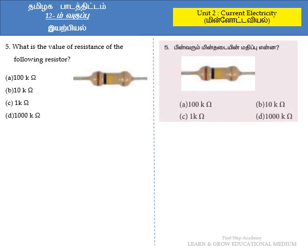Hi, hello, welcome. This is your First Step Academy learning educational medium. In this video we are going to discuss the answer for the book question number 5 in unit 2, current electricity. Since it's a bilingual video, we are going to discuss the answer in both English and Tamil. First we'll discuss in English. The question is: what is the value of resistance of the following resistor? They have given a diagram of the resistor and we need to find its value.